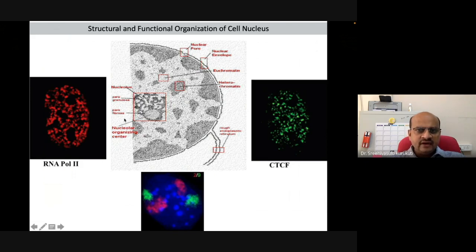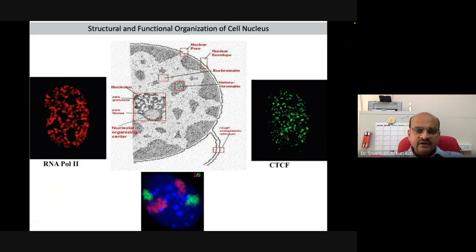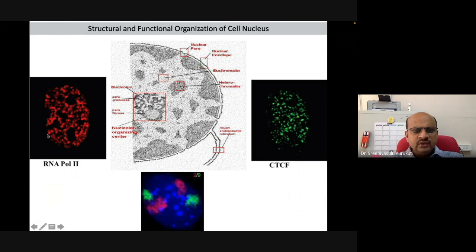If you try to look at how exactly chromatin and transcription are organized within the spatial organization of a genome, it has been learned that gene activity is compartmentalized. Now, if you try to locate any protein known to play a role in transcription — for example, RNA polymerase II, basal transcription factors, or cell-type specific transcription factors — whenever researchers tried to locate these proteins within the nucleus, they were not seen as a diffuse pattern, but instead appeared as large nuclear foci distributed throughout the nucleus.